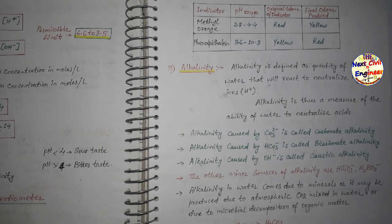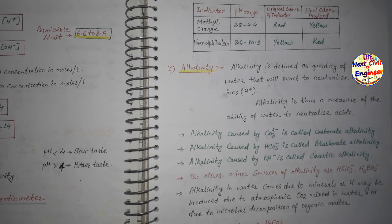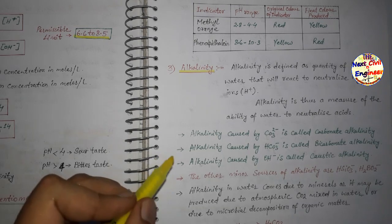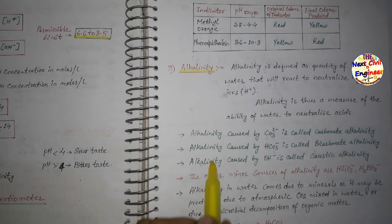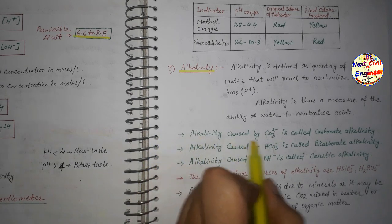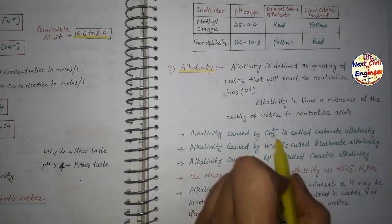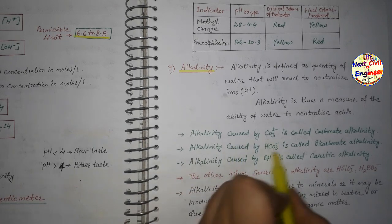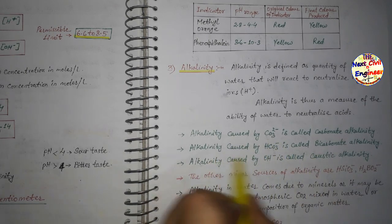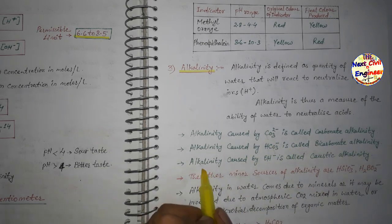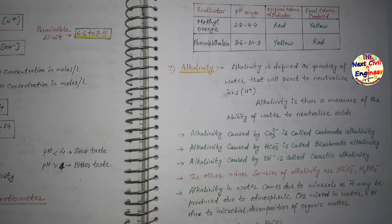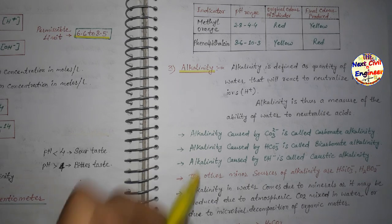Watch the entire video without skipping. Alkalinity is caused by three types of ions: (1) Carbonate ion (CO₃²⁻) — called carbonate alkalinity; (2) Bicarbonate ion (HCO₃⁻) — called bicarbonate alkalinity; (3) Hydroxide ion (OH⁻) — called caustic alkalinity. Please note these three important points. Other minor sources of alkalinity include boron (HBO) and silicon compounds.